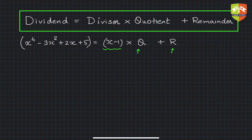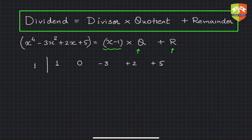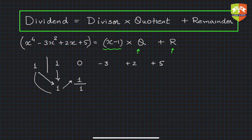First, write down all the coefficients for the complete polynomial. There is no x³ term, so its coefficient is 0. The coefficients are: 1, 0, -3, 2, 5. Since we are dividing by (x - 1), write 1 on the side. Bring down the leading coefficient 1, then multiply by 1 to get 1, and write that product in the next column.